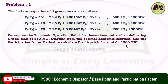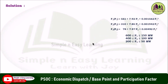Starting from the optimal economic solution, use the participation factor method to calculate the dispatch for a total load of 900 MW. So in this problem, first find the economic operating point (base point) for 850 MW load, and second find the optimal economic solution using the participation factor method for 900 MW load — a 50 MW load difference.